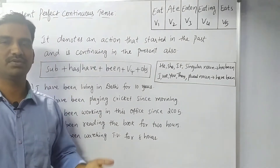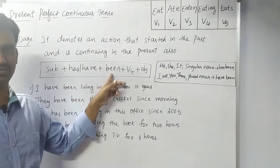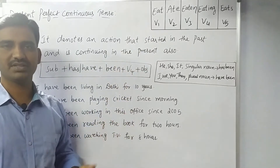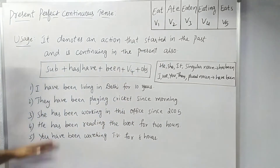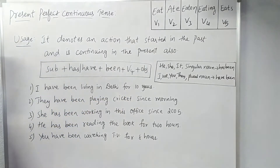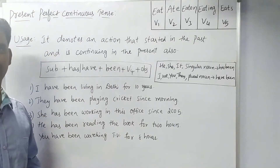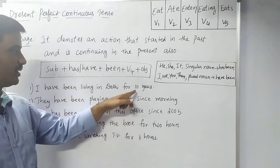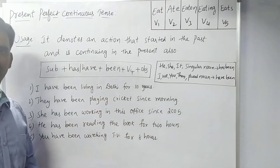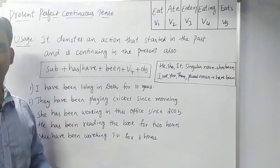For example: 'I have been living in Delhi for 10 years.' The action of living in Delhi started in the past and is still continuing in the present. That is why we use Present Perfect Continuous here.